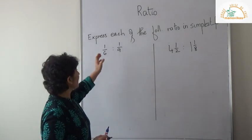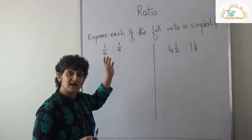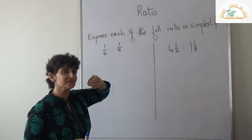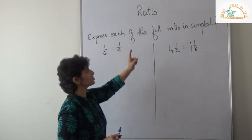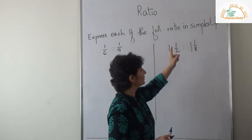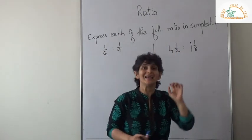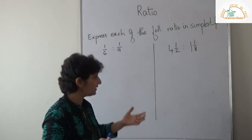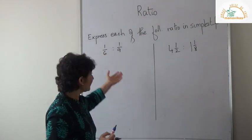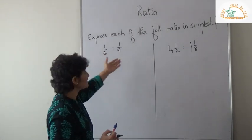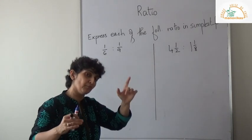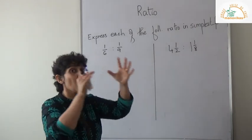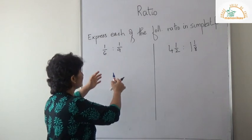Now I have another set of examples. Let us read the question first: express each of the following ratios in the simplest form. So again, you need to bring these ratios to their simplest form. Previously you had two whole numbers. Now we have fractions: 1 upon 6 is to 1 upon 9, and 4 and a half is to 1 and 1 upon 8.